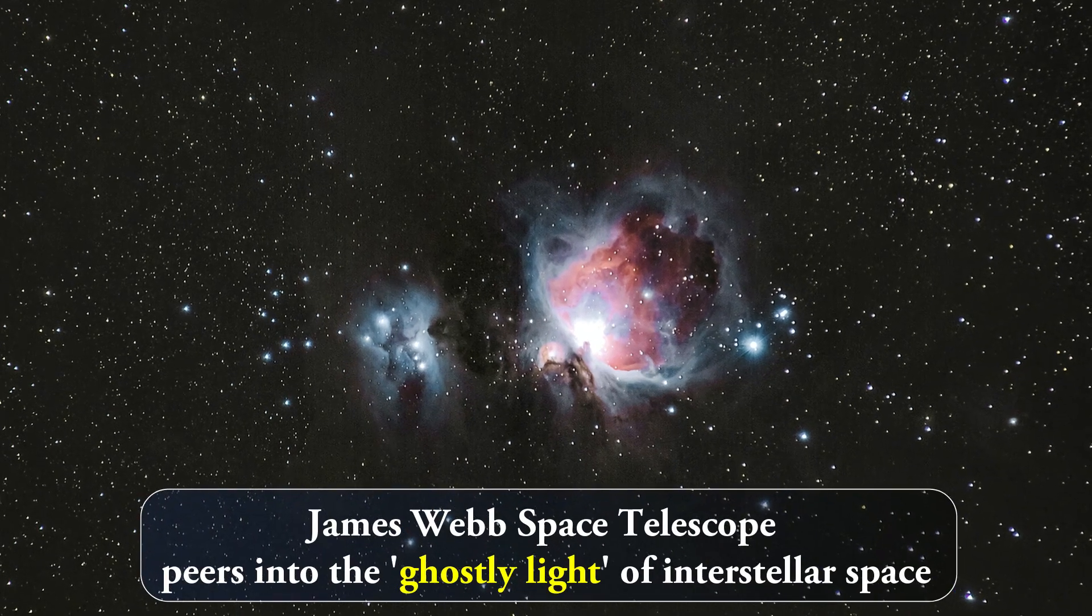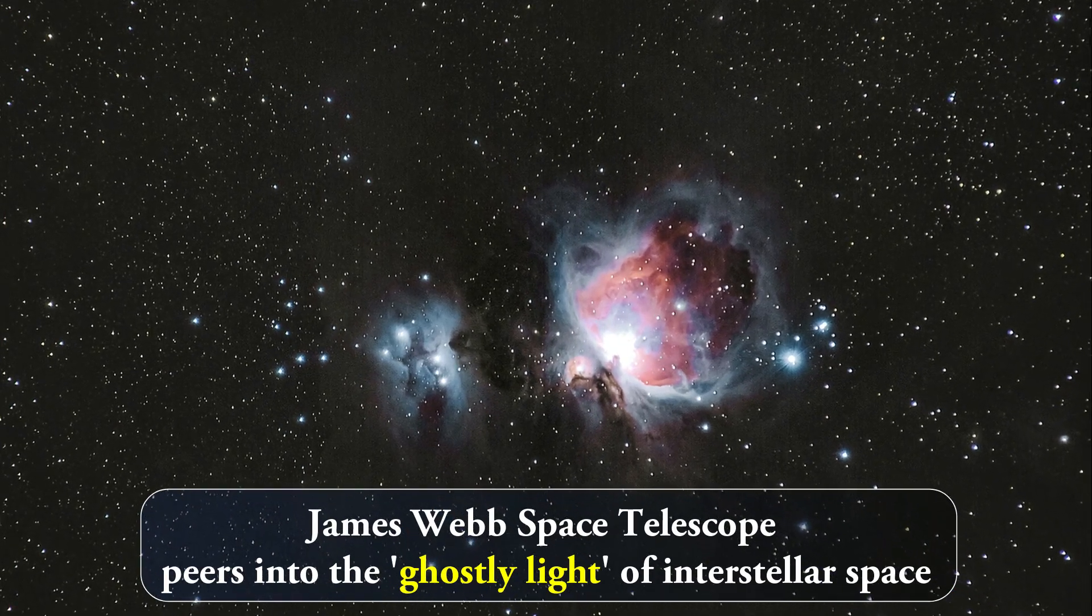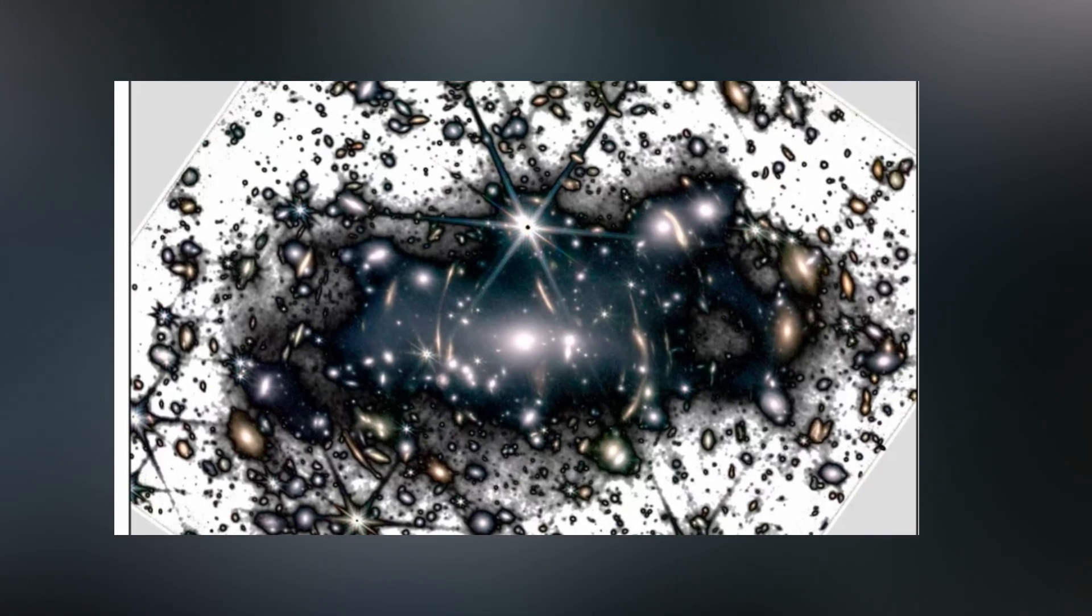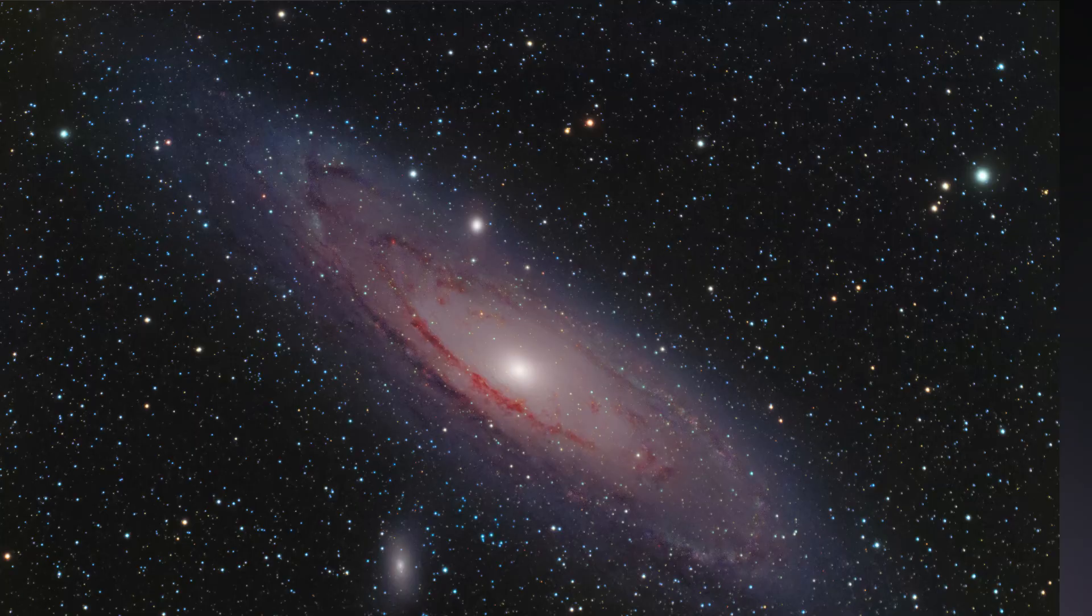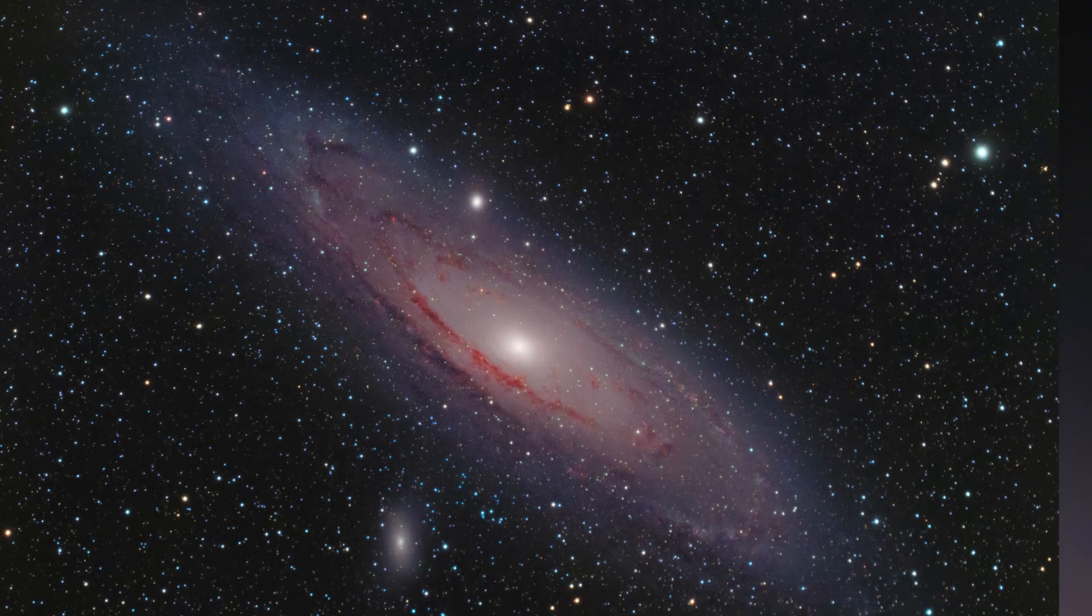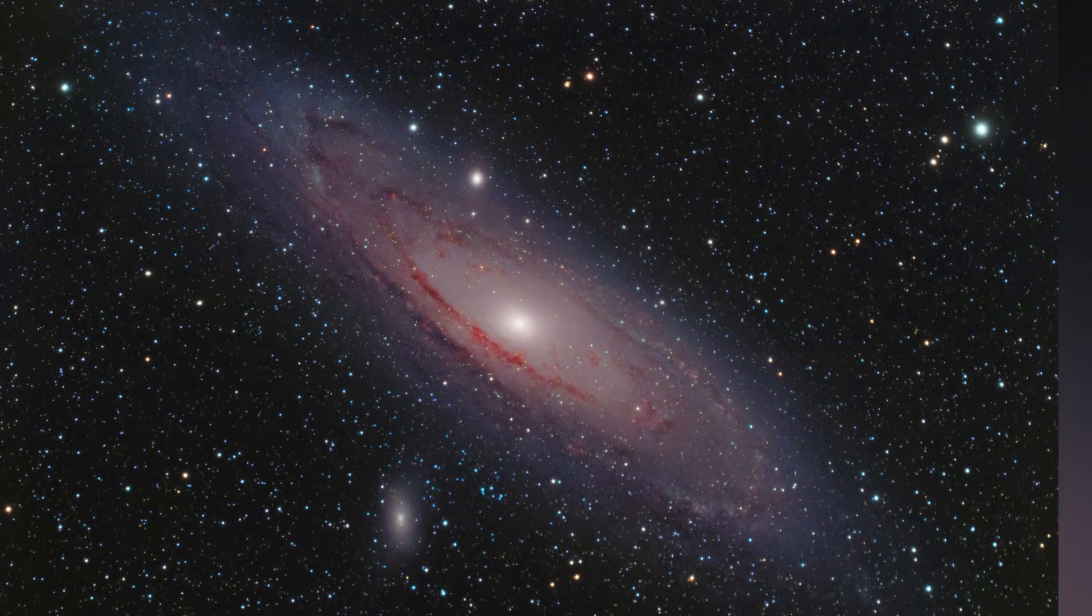James Webb Space Telescope peers into the ghostly light of interstellar space. The faint light emitted by orphaned stars that exist between the galaxies and galactic clusters is featured in the first deep field image produced by the space telescope.